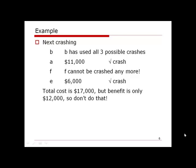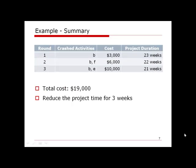To summarize, we crashed the project over three rounds: Round 1 — crash B at $3,000; Round 2 — crash B and F at $6,000; Round 3 — crash B and E at $10,000. Total crashing cost is $19,000, and the project duration is reduced from 24 weeks to 21 weeks. The total project cost is 21 weeks × $12,000 plus $19,000 in crashing costs.